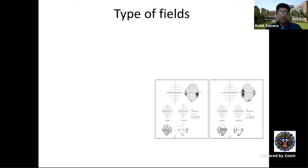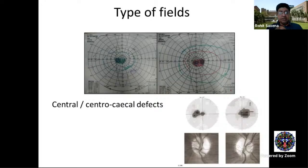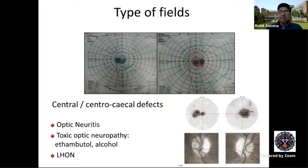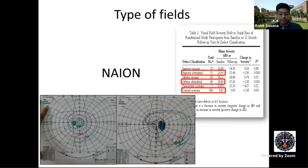An enlarged blind spot with corresponding papilledema on fundus examination is a classic finding. Central and centrocecal defects suggest optic nerve dysfunction such as optic neuritis, toxic optic neuropathies like ethambutol toxicity, alcohol toxicity, and Leber's hereditary optic neuropathy. NAION can present with various field defects but most commonly an altitudinal defect with loss of the inferior field.